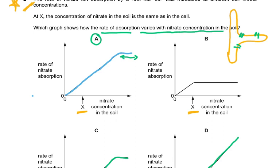Think of it like a cinema hall with four doors — only four people can enter at a time, so the doors become the limiting factor. If there are 100 people outside, only 10 can come per unit time. The channel proteins become the limiting factor. A good MCQ question would test this: why has the rate of nitrate absorption leveled out?